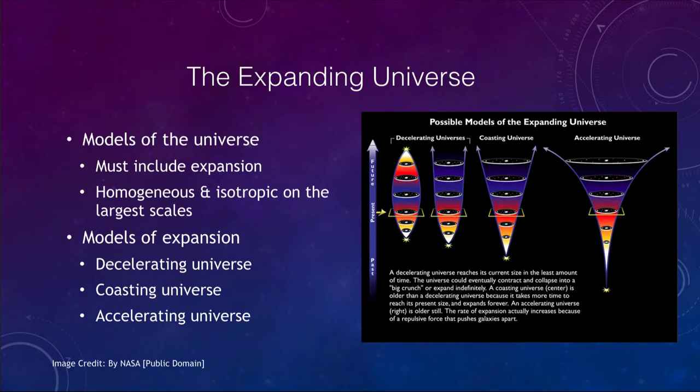For the expanding universe, what do our models have to show? Our model has to show expansion. We know that the universe is expanding. We also have to be able to show why the universe is homogeneous and isotropic on the largest scales, going back to our cosmological principle.